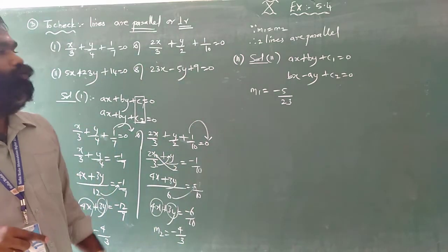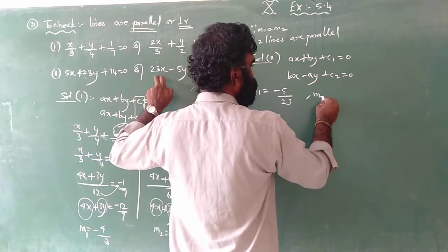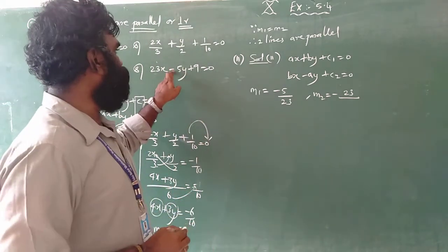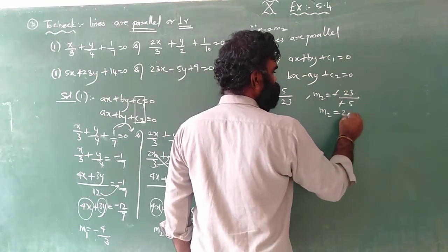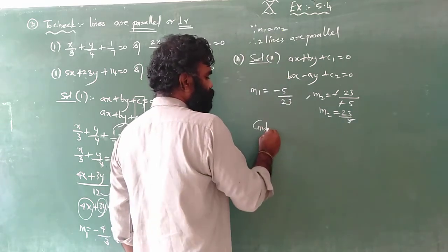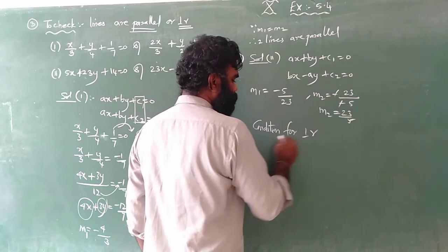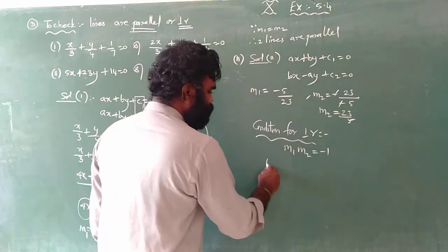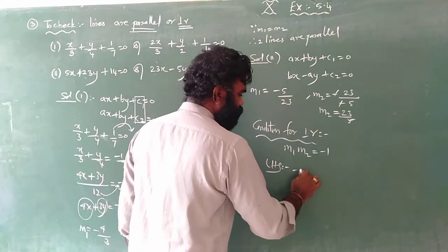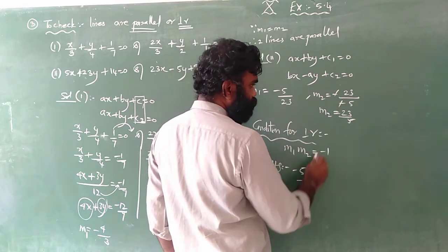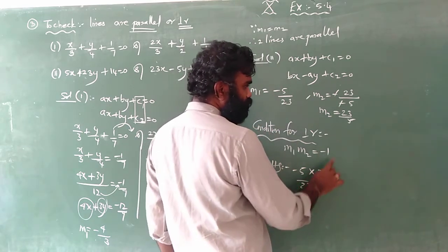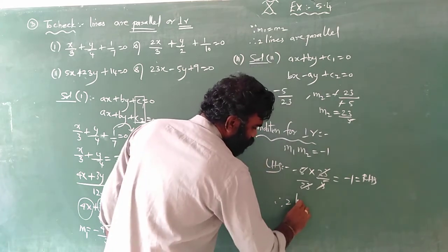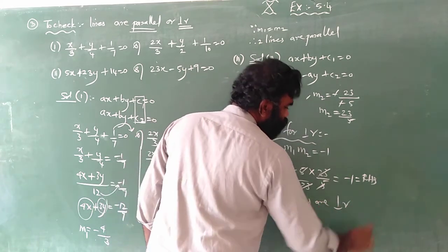So m1 equals minus 5 by 23. For m2, the coefficient of x is 23 and coefficient of y is minus 5, so minus and minus cancel, giving m2 equal to 23 by 5. Now checking the perpendicular condition: m1 times m2 equals minus 5 by 23 times 23 by 5. The 5 and 23 cancel, giving minus 1, which equals the RHS. Therefore the two lines are perpendicular.